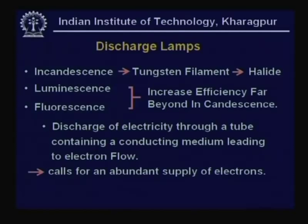In discharge lamps, certain radiations are not visible or are in zones not normally visible. They can be made visible through fluorescence, which is quite often used in day-to-day life. The combination of luminescence and fluorescence increases efficiency — in terms of light output per every watt of energy consumed — far beyond incandescence.